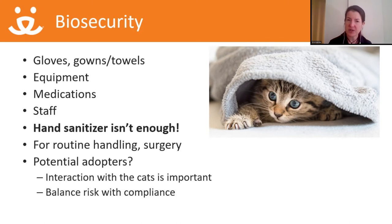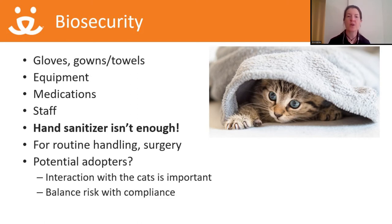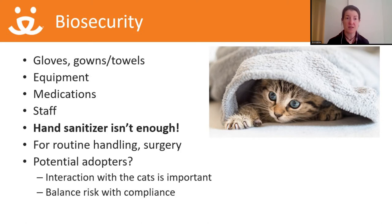When it comes to biosecurity with the public, we need to balance disease risk with adoption opportunity. Signs saying 'don't touch the kittens' may protect against disease but reduce adoption chances — and getting cats adopted is our best stress-reduction strategy. Compliance with a lesser protective measure, like hand sanitizer, is better than no compliance with the ideal one. So balance risk with compliance and adoption conversion potential.